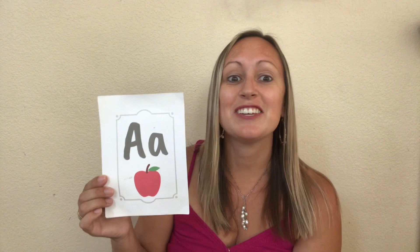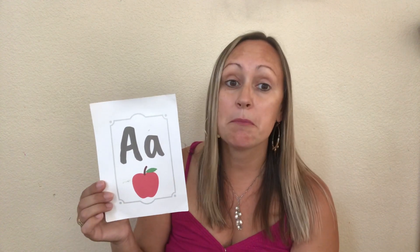What picture is on this card? That's right — that is an apple! So our song goes like this: A is for apple, ah ah apple, ah ah apple, A apple. Now we have a motion — when we say A is for apple, we reach way up into a tree, get an apple, and bring it to our mouth.